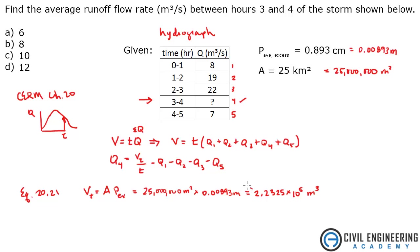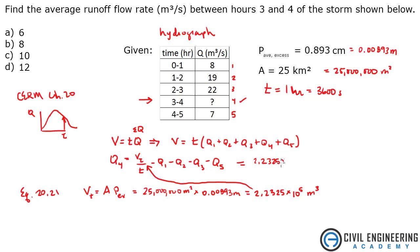Now that we have that, we plug this into our equation. We know the volume. Time — these are all in increments of one hour, so we convert to seconds because our flow rates are in meters cubed per second. So: 2.2325 times 10 to the 5th divided by 3,600 seconds, minus Q1 (8), minus Q2 (19 meters cubed per second), minus 22, minus 7. That gives a total answer of 6.01 meters cubed per second.